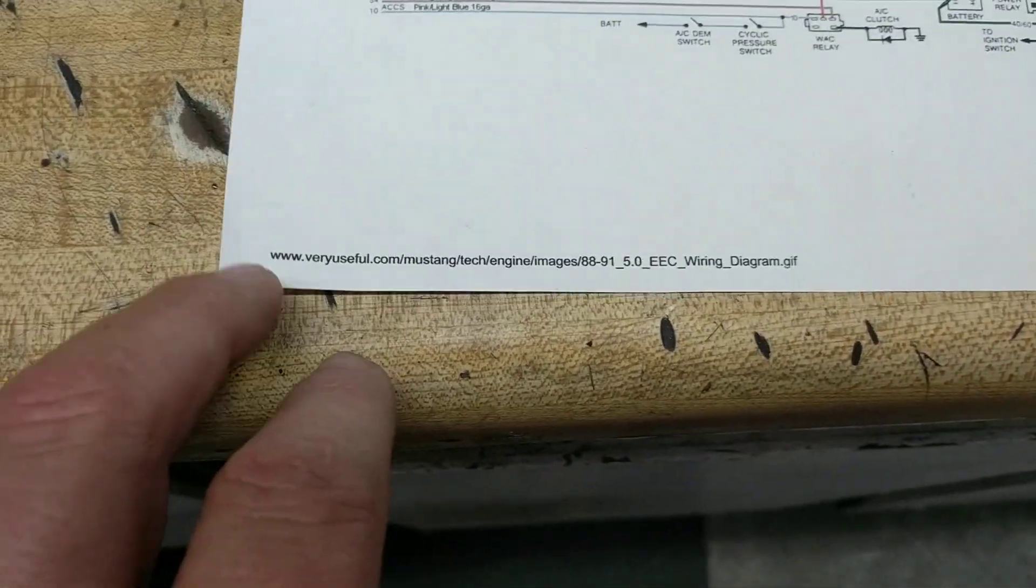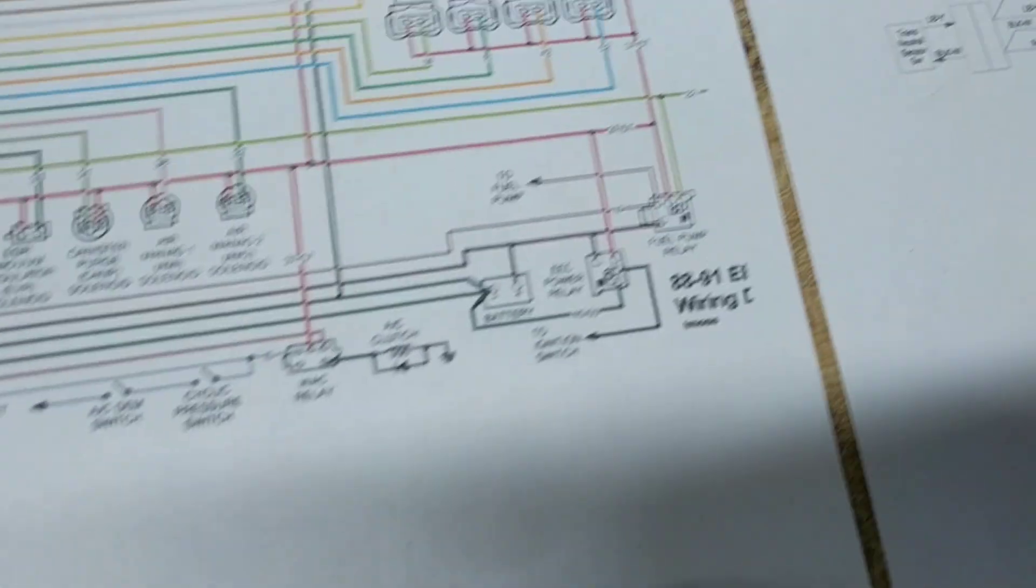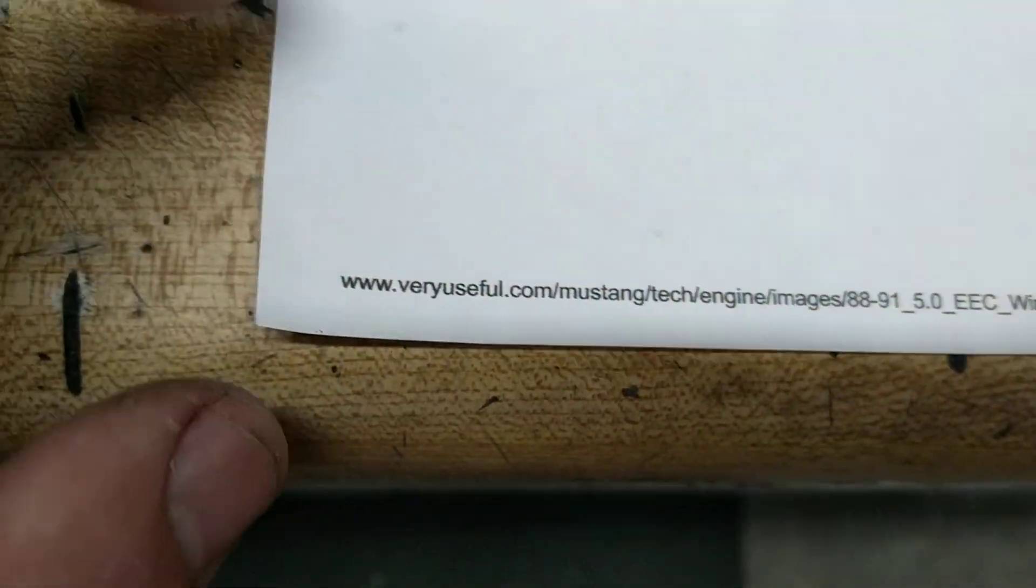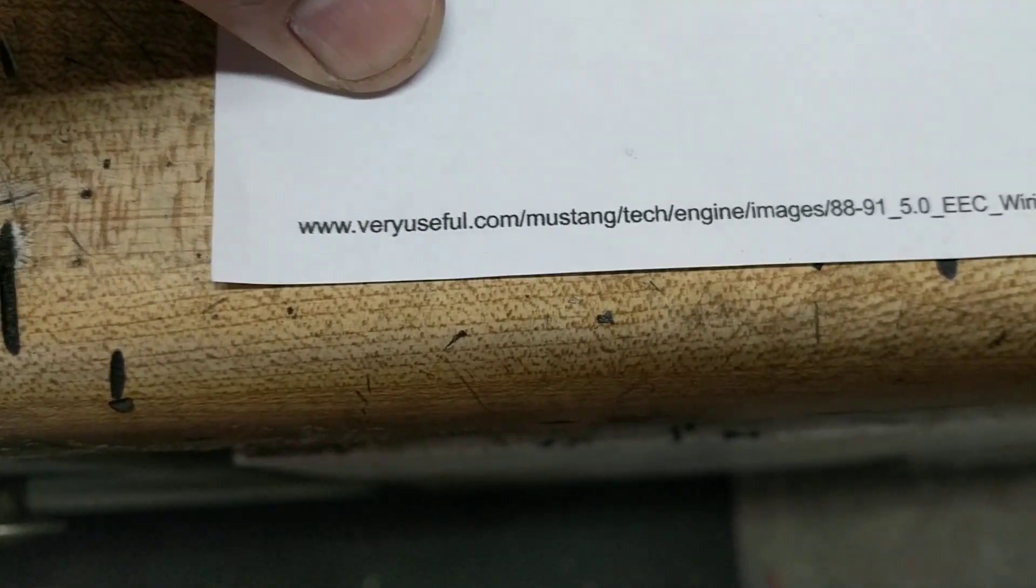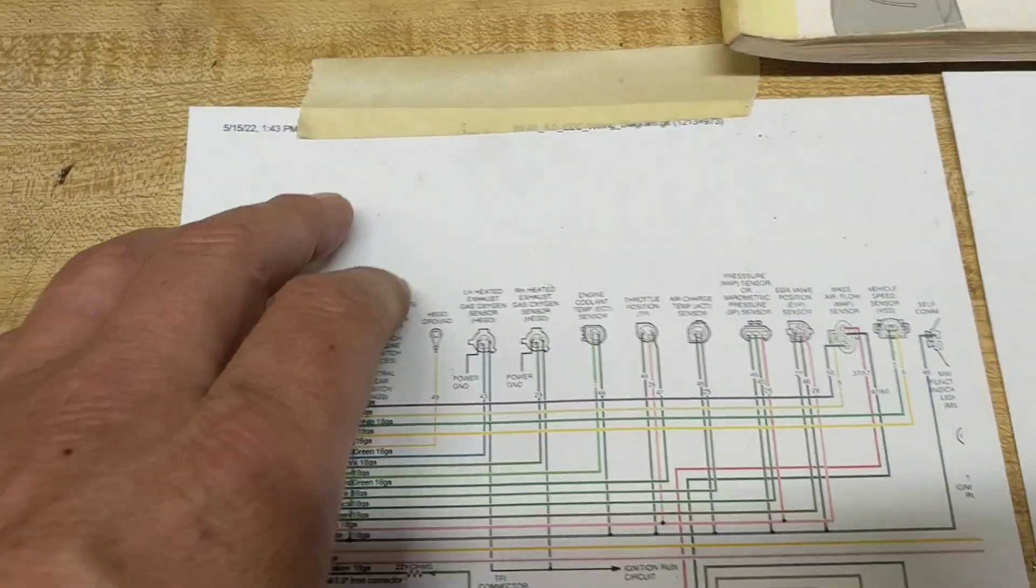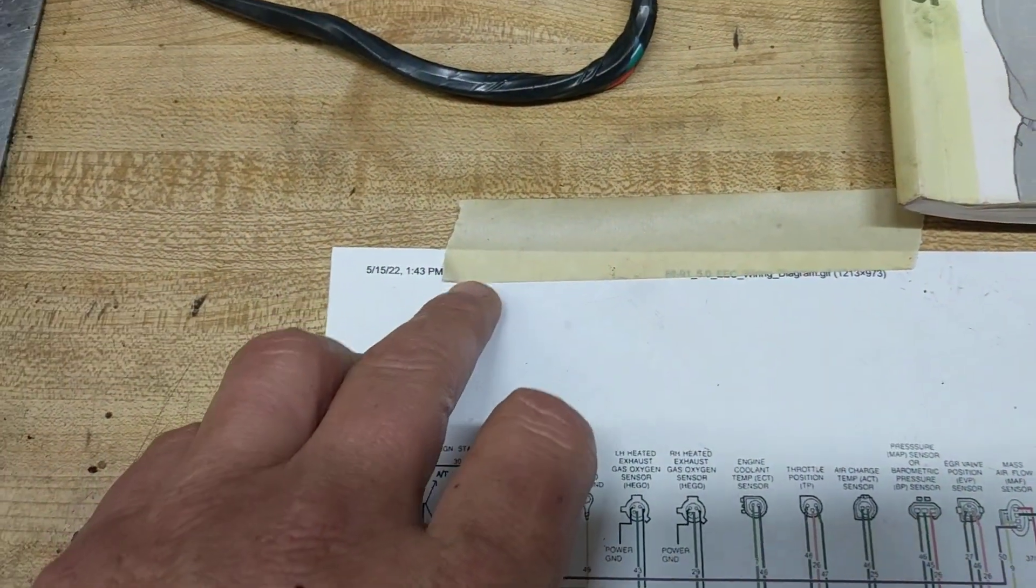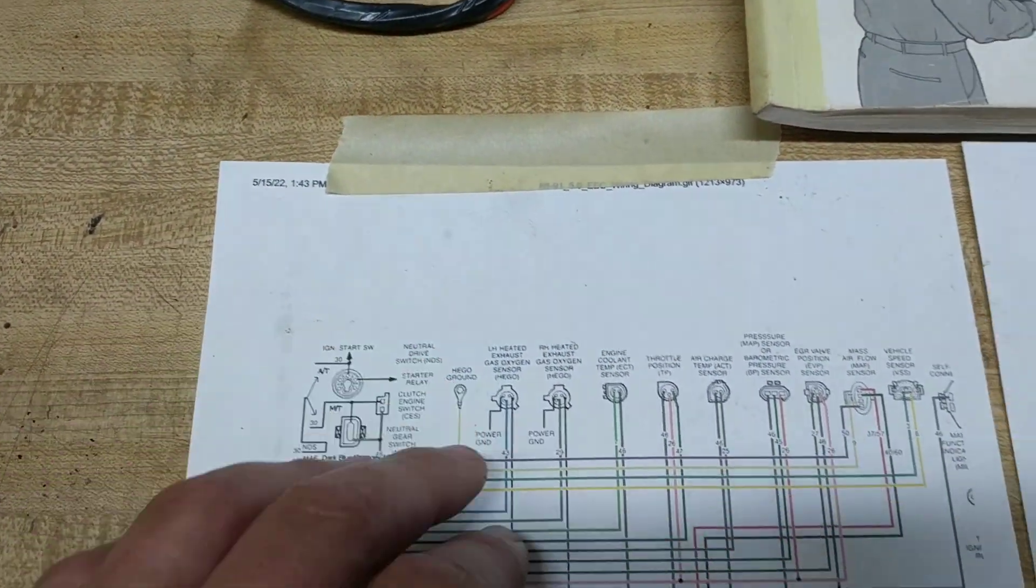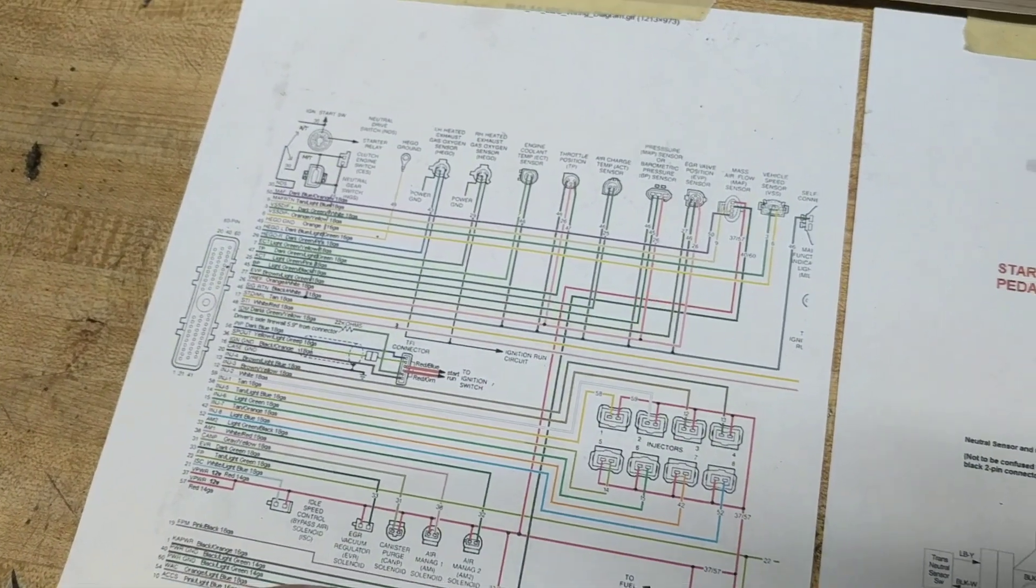This is something Tom Moss put together. This is for the 88 to 91. That's the address on the interwebs. A lot of wiring diagrams here are veryuseful.com Mustang. Put that in your start page or Google or DuckDuckGo, whatever you use and you can find it.